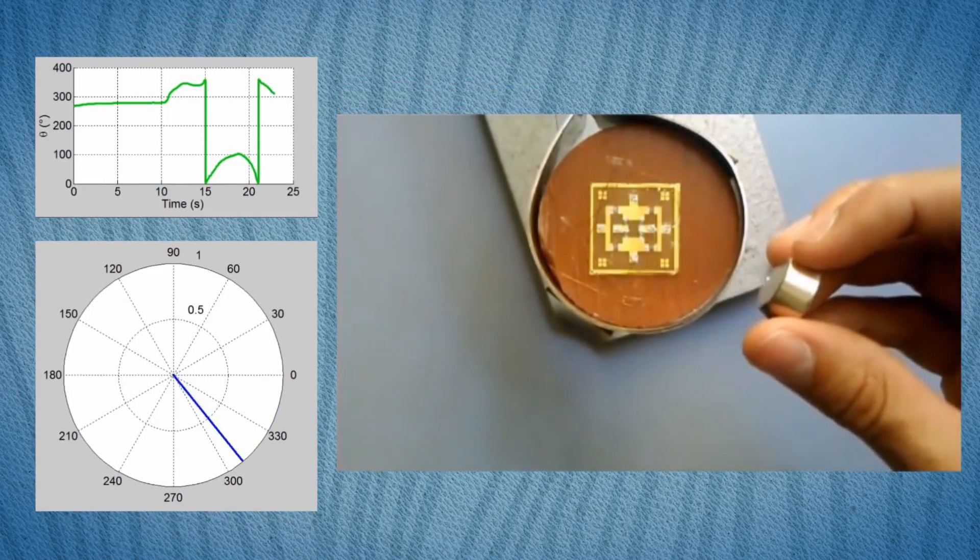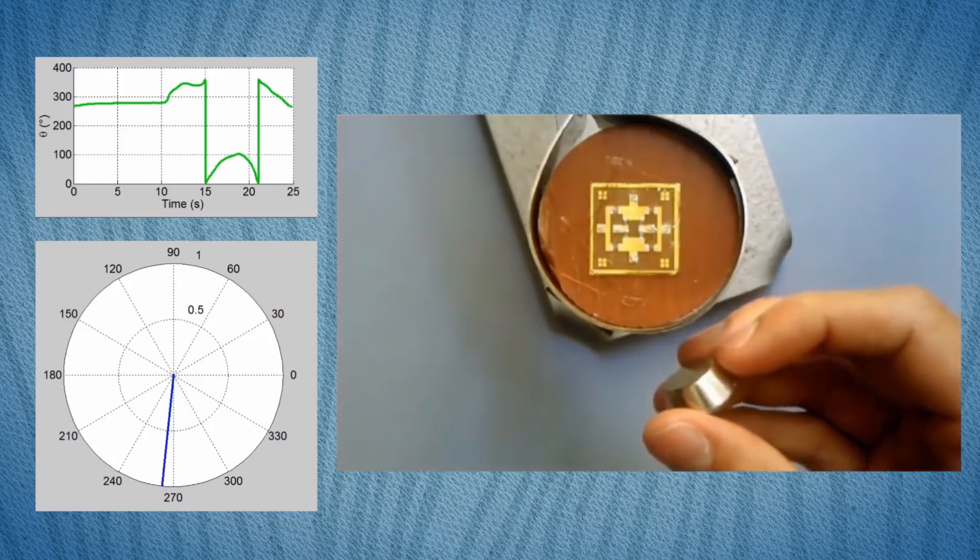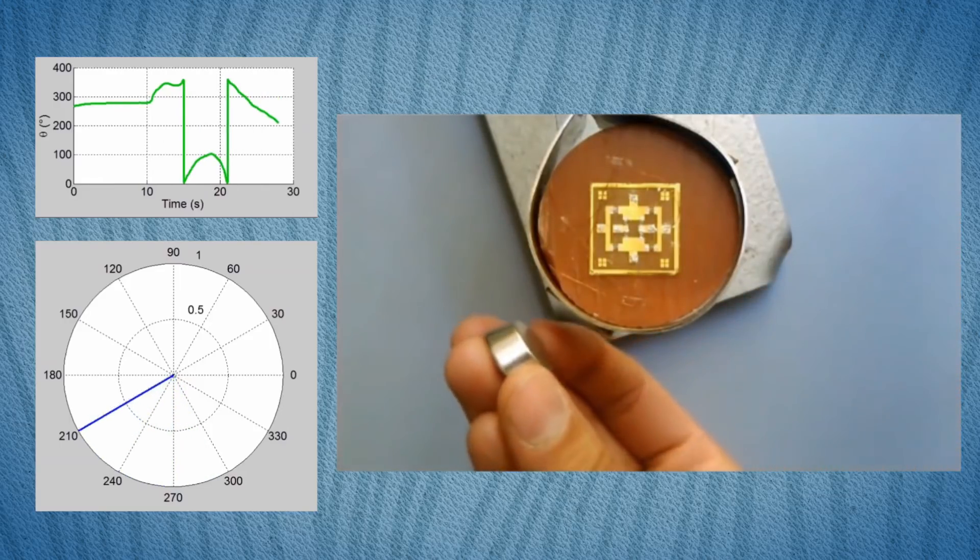When the skin is near a magnet, the sensor produces a voltage which varies depending on its angle relative to the magnetic field.